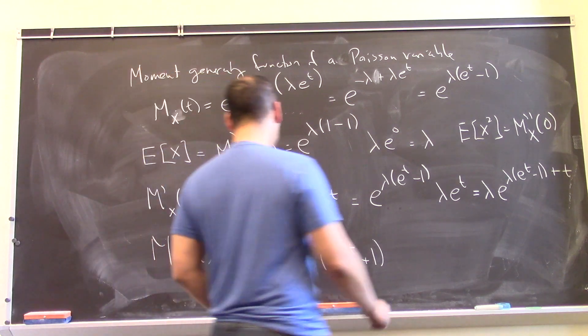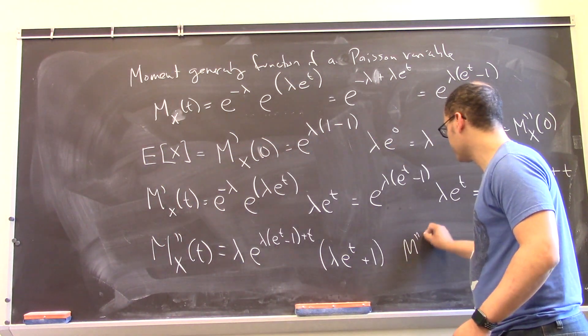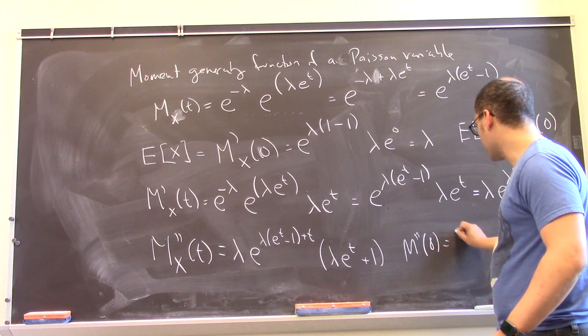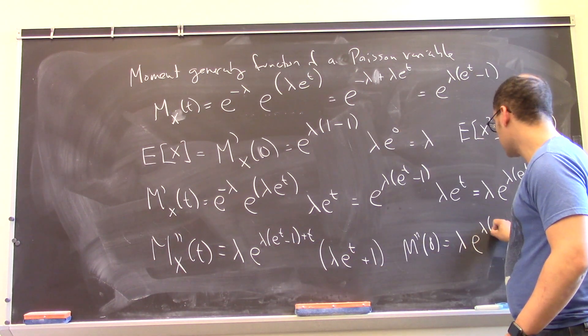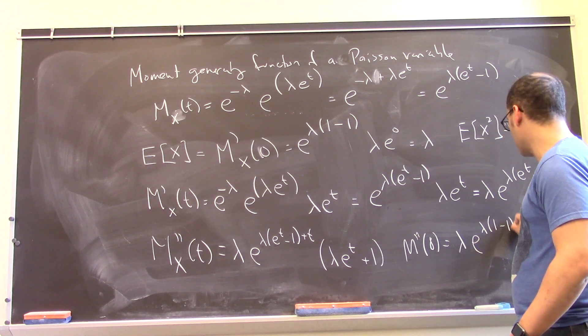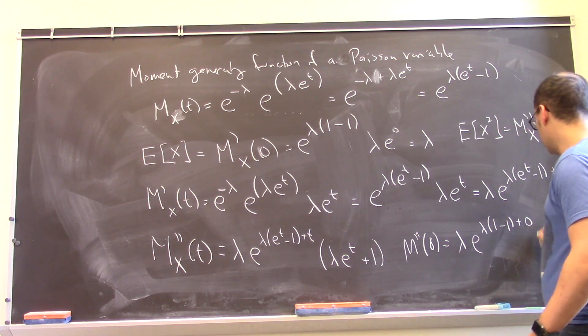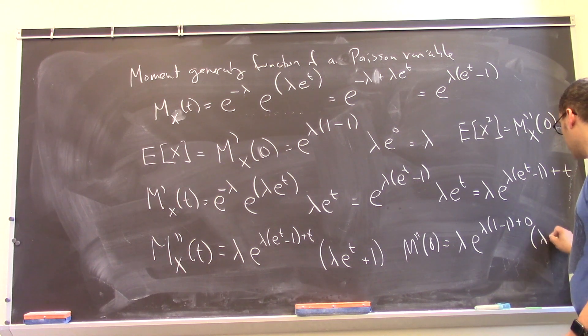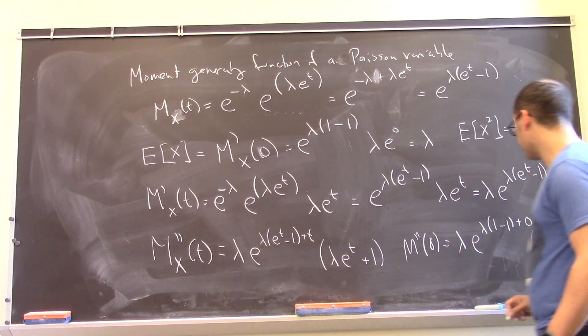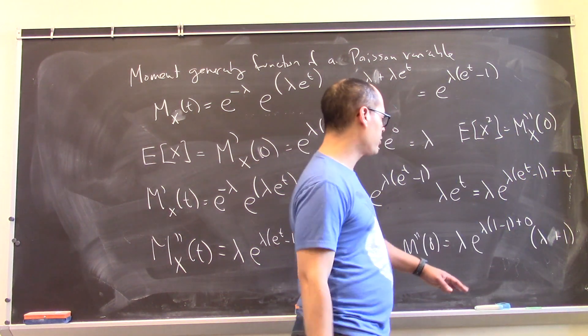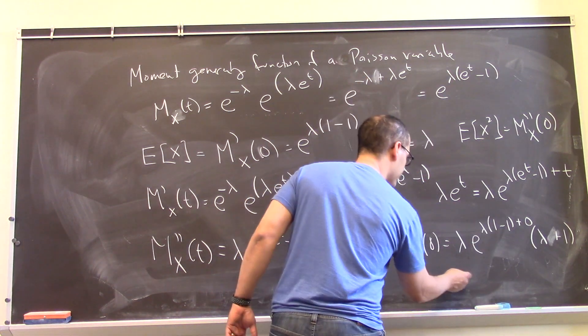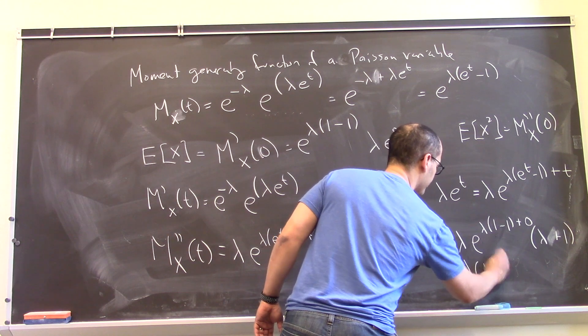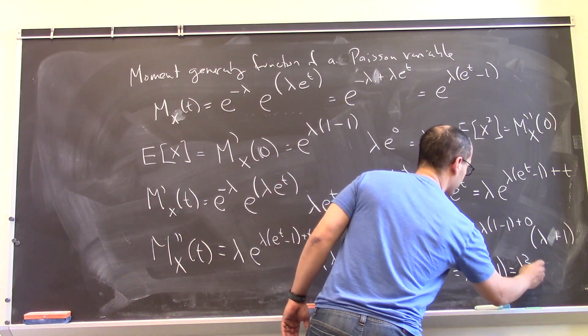And now if I plug in 0, what do we got? We get a lambda e to the lambda times 1 minus 1 plus 0 times lambda e to the 0 plus 1. Okay, now, of course, this thing is just e to the 0. That's a 1, so we get lambda times lambda plus 1, which is lambda squared plus lambda.